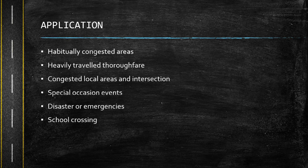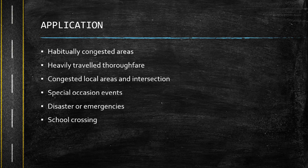The application of traffic engineering includes habitually congested areas, heavily traveled thoroughfares, congested local areas and intersections, special occasion events, disaster or emergencies, and school crossings. These are the areas usually designed or amended by traffic engineering to avoid congested areas and traffic jams.